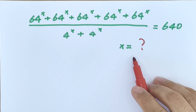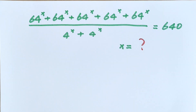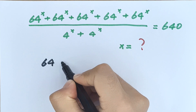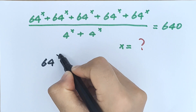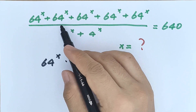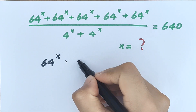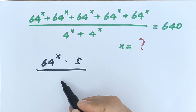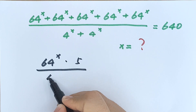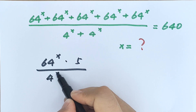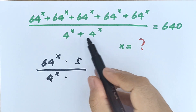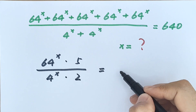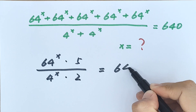The numerator is 64 to the power of x times 5 — counting 1, 2, 3, 4, 5 terms. The denominator is 4 to the power of x times 2 — counting 1, 2 terms. So we have 64^x times 5, divided by 4^x times 2, equals 640.